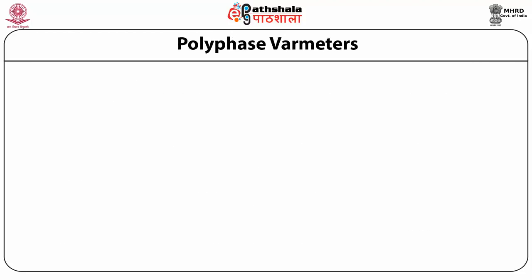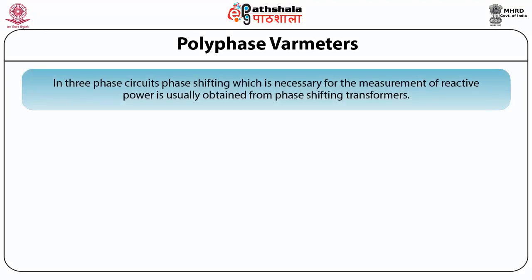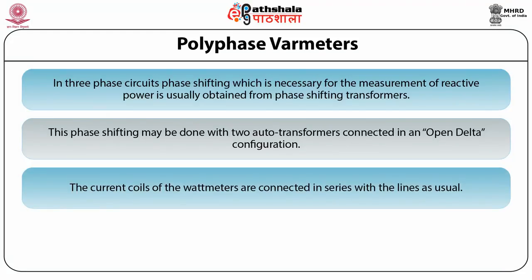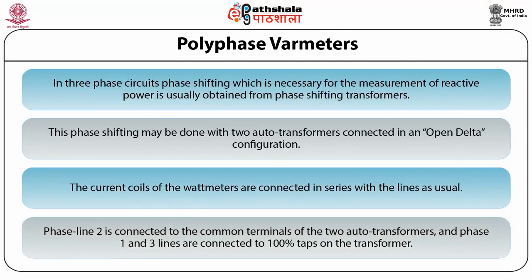Second is the polyphase wattmeters. In three phase circuits, the phase shifting necessary for the measurement of reactive power is usually obtained by phase shifting transformers. This phase shifting may be done with two autotransformers connected in an open delta configuration. The current coils of the wattmeters are connected in series with the lines as usual, while phase line 2 is connected to the common terminals of the two autotransformers and phases 1 and 3 are connected to the 100% taps on the transformer.